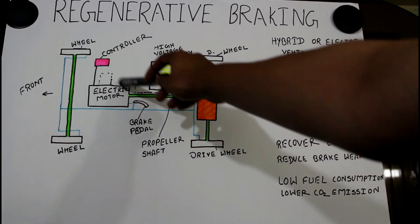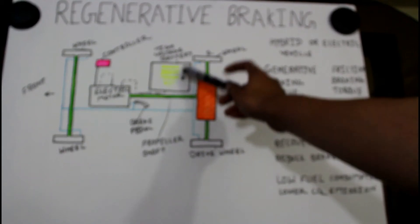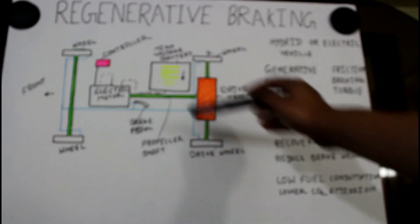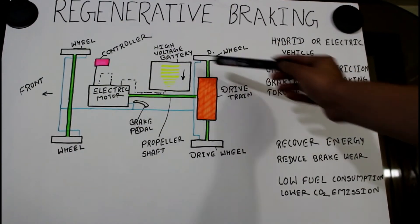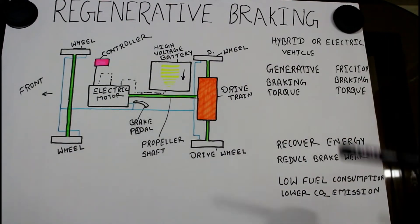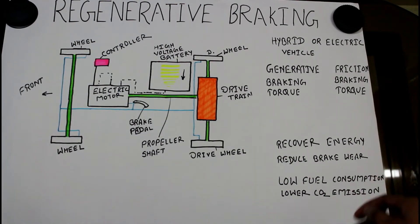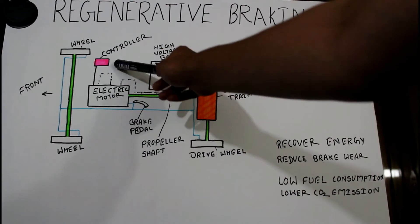This electrical energy is stored in the high voltage battery. You can see here, this is the sign of a battery charging. This is continuously charging with the deceleration of a car. And this whole system is controlled by this controller.